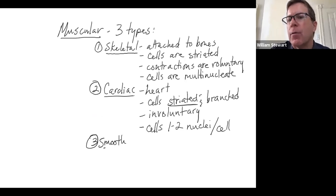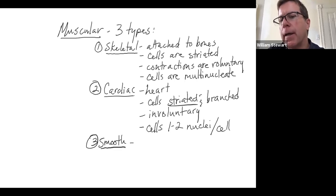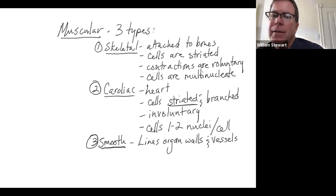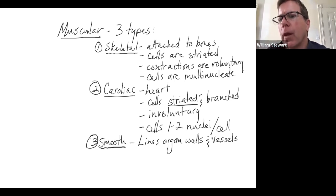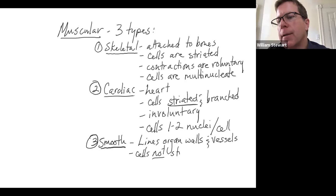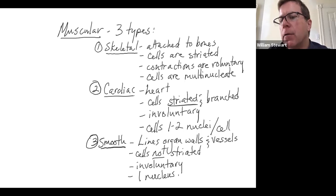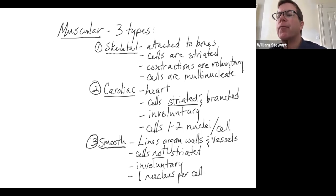Third, smooth muscle cells are not striated — that's where it gets its name. Its locations are the walls of organs and vessels, such as the walls of the intestines, stomach, esophagus, and the walls of arteries and veins. Contractions are also involuntary, and there is one nucleus per cell — they are not multi-nucleate.